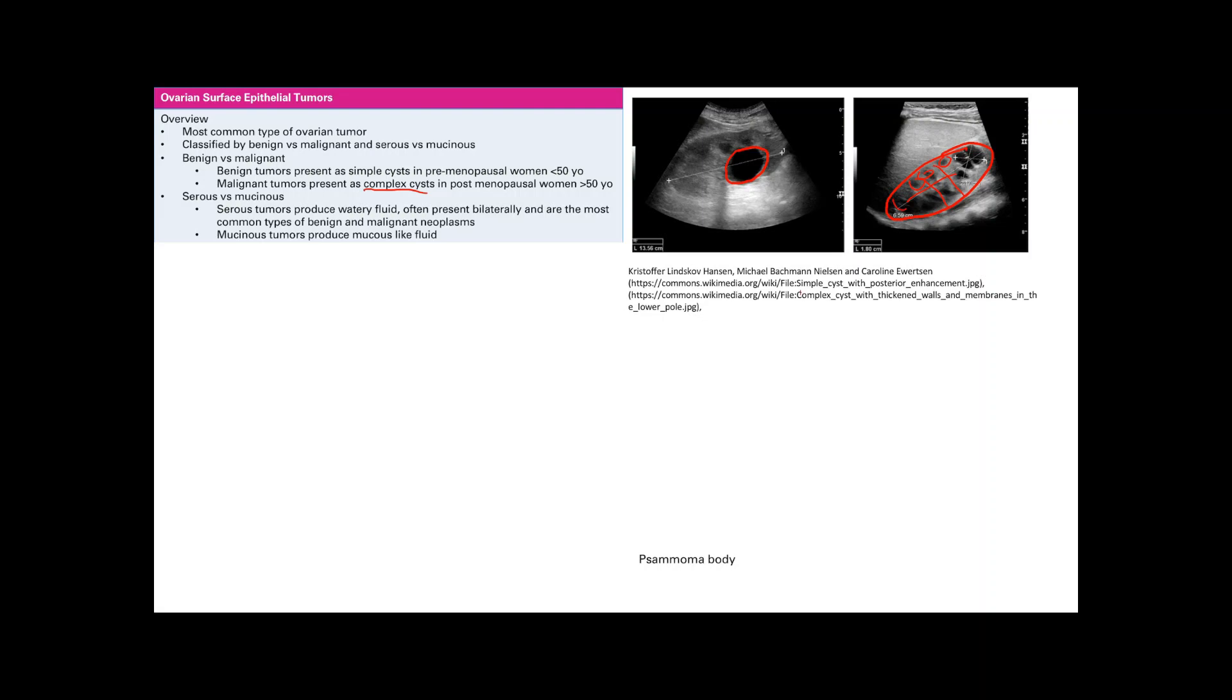The other one is serous versus mucinous. Serous tumors usually produce watery fluid and they usually present bilaterally. This is the most common type of benign as well as malignant neoplasm. Mucinous tumors produce mucus-like fluid. It's obvious.